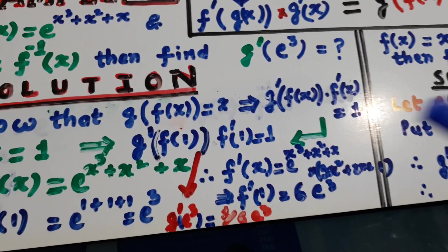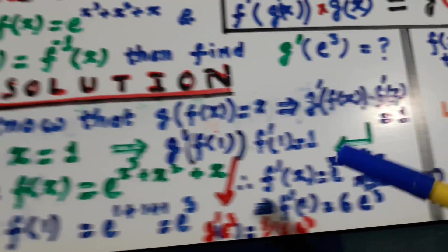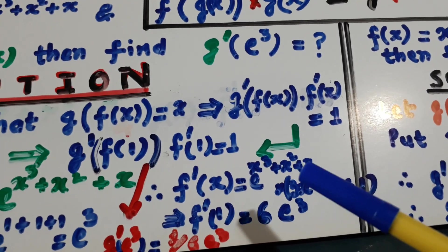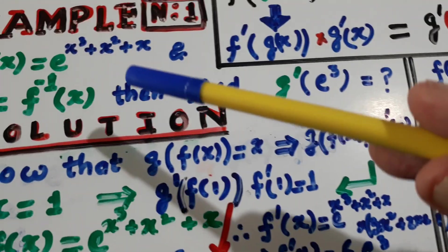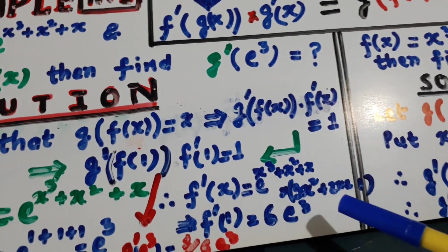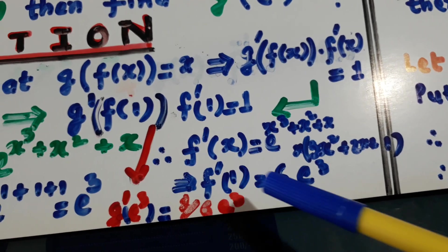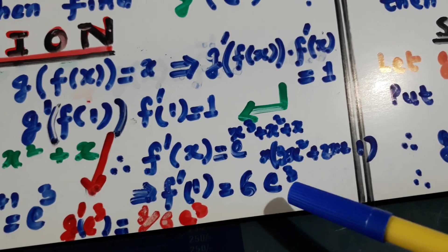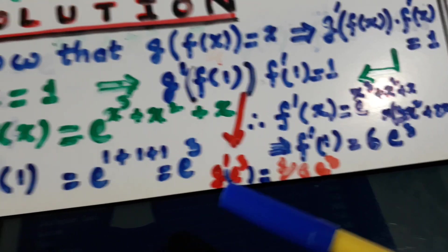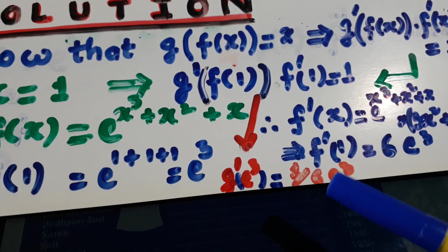f dash x is equal to e raised to power x³ plus x² plus x, multiplied by the derivative inside: derivative of x³ is 3x², derivative of x² is 2x, derivative of x is 1. Now put x equal to 1 — you get f dash 1 equal to 6e³. So you can put it here and the answer will come: g dash e³ is equal to 1 over 6e³.